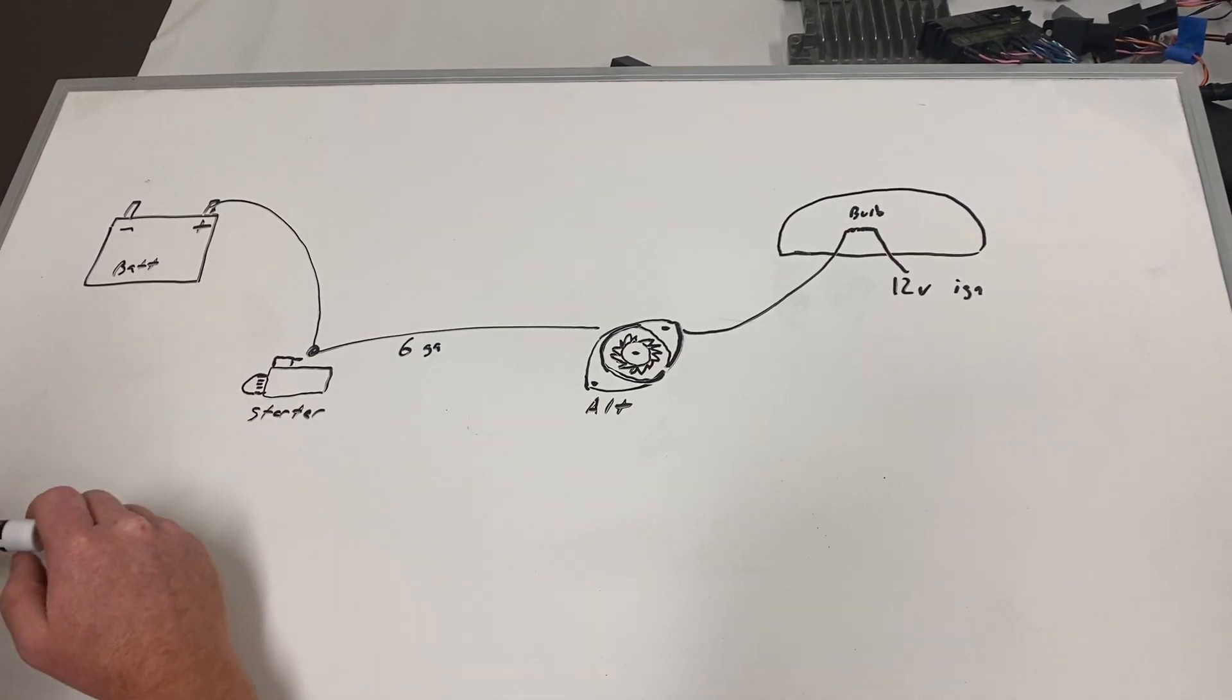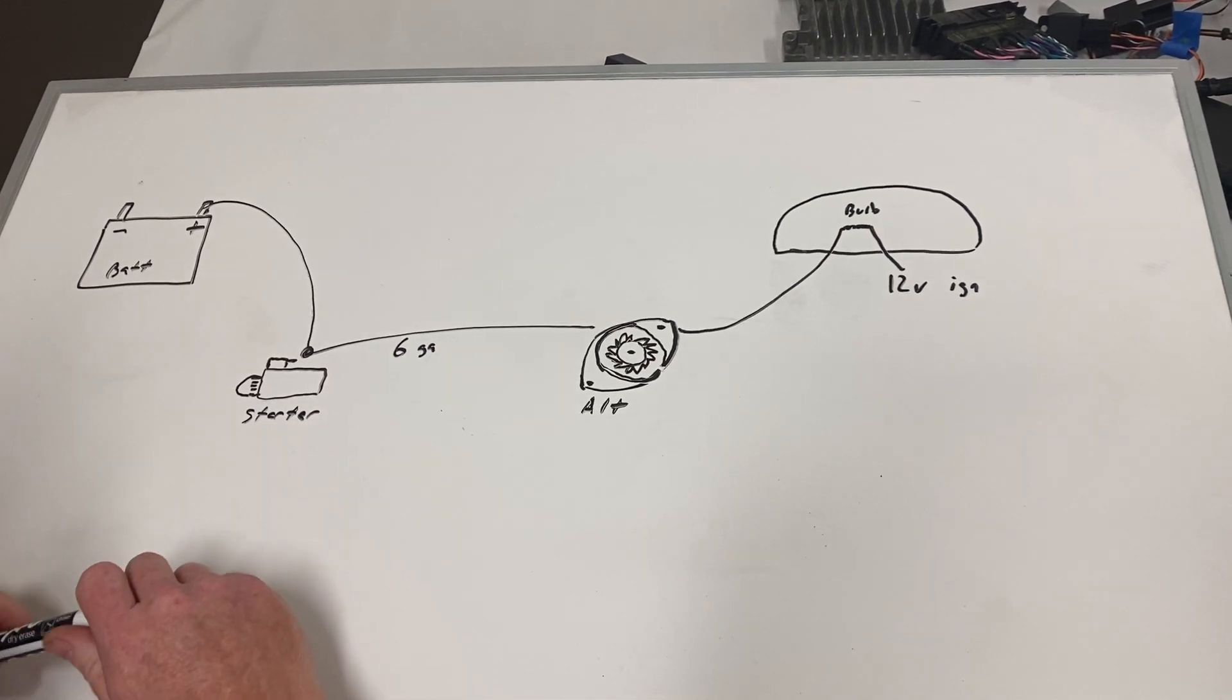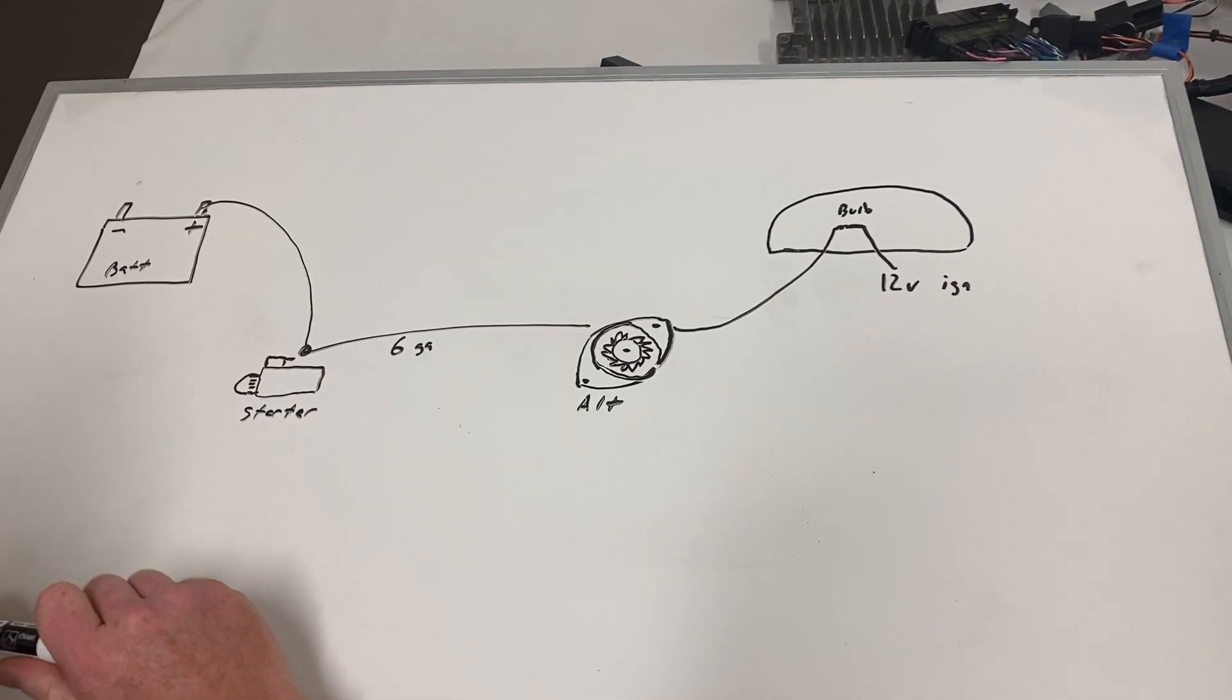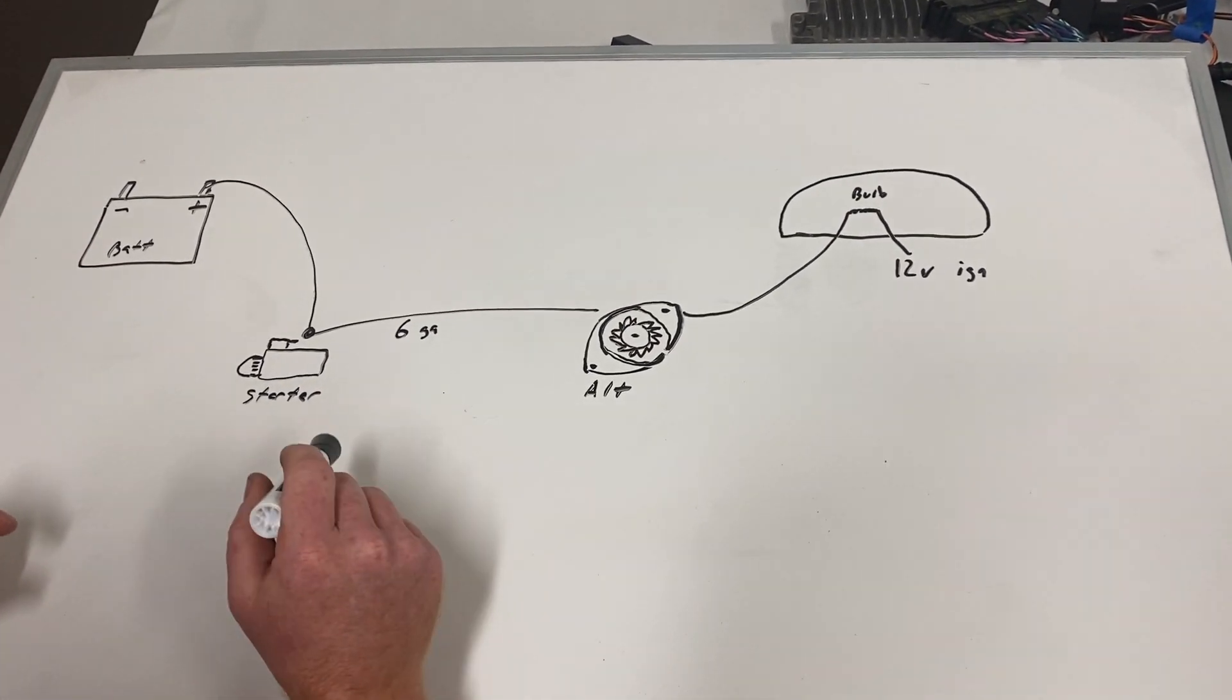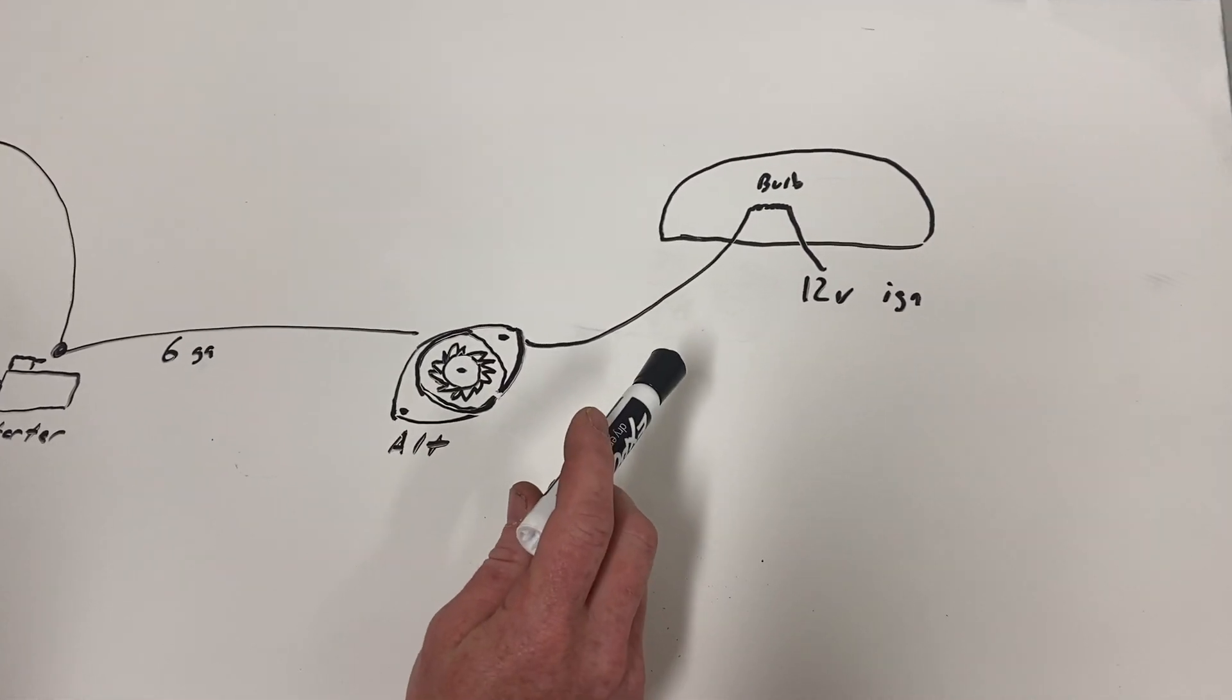So what that's going to do is basically connect your battery to your alternator using the starter as an intermediary point. Now that we've got that out of the way, we're going to talk a little bit about the charge lamp in your gauge cluster.